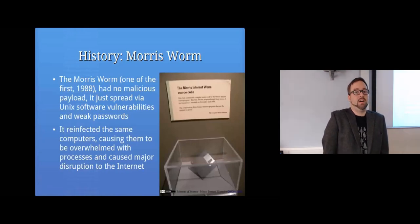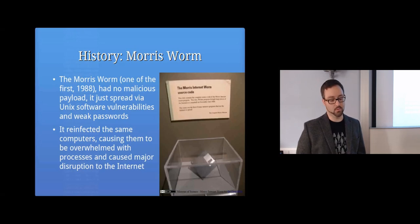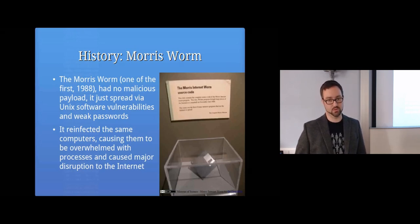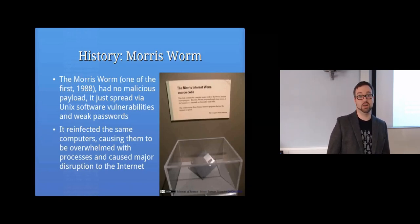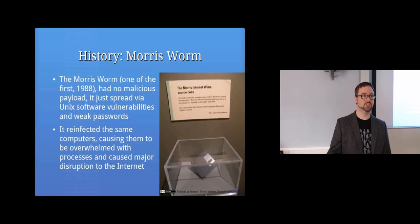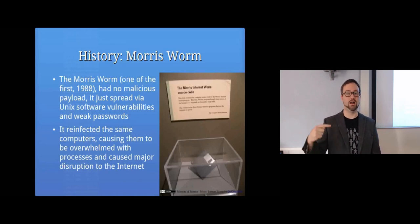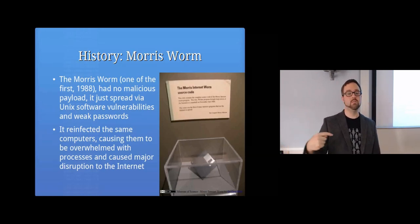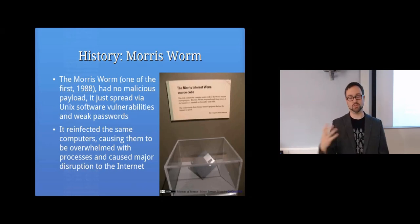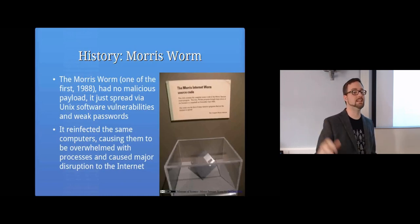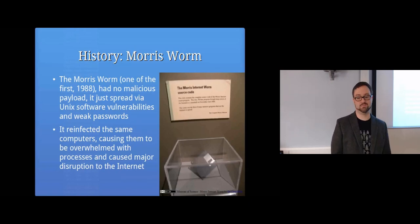The Morris Worm from 1988 was one of the first worms with a big impact. It had no intentional payload — it just spread via software vulnerabilities and weak passwords onto other Unix systems on the network. But because of the way it was coded, it reinfected the same computers over and over again. There was code built in to try to limit that, but it still spread back into the same computers, overwhelming them and causing a major disruption to the internet, with big chunks of it stopping working.